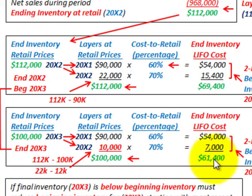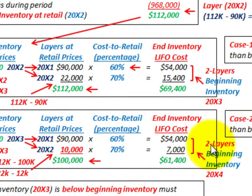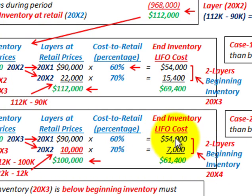Our ending inventory at LIFO cost is the sum of $54,000 plus $7,000, giving us $61,400. We still have two layers going into the beginning inventory for 20x4: $54,000 for the 20x1 layer and $7,000 for the 20x2 layer.